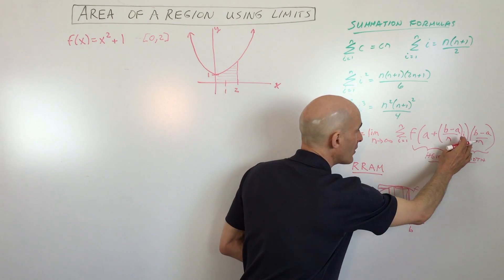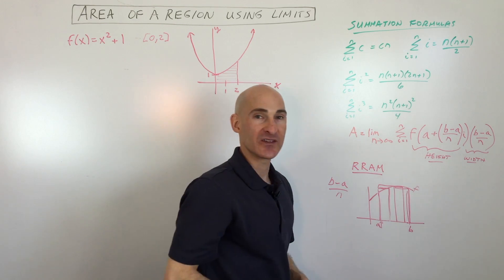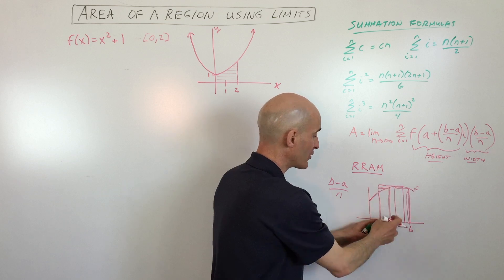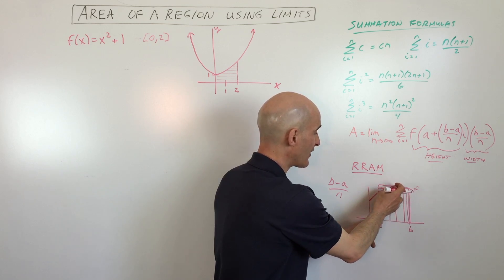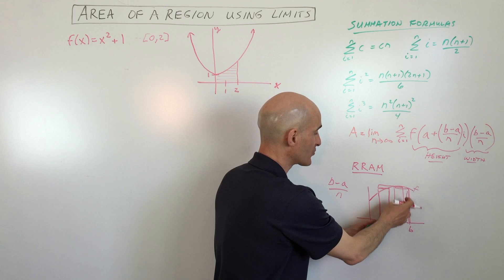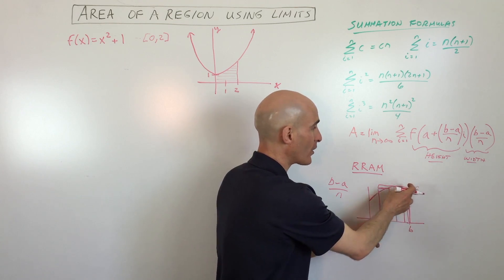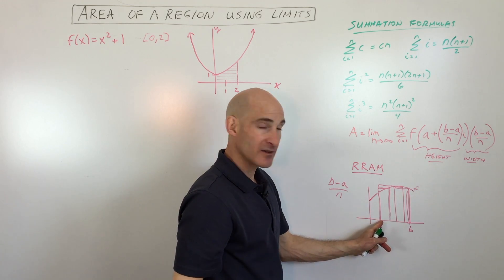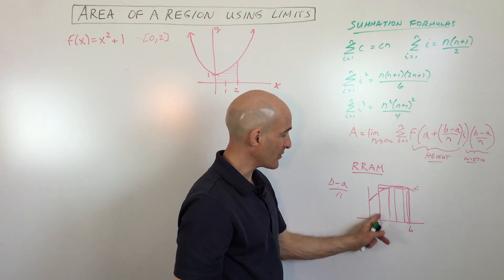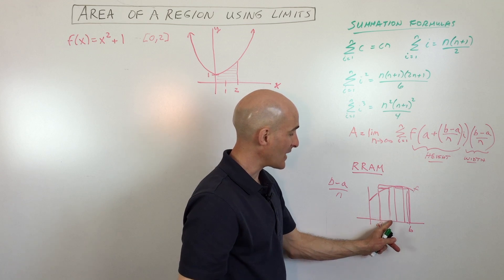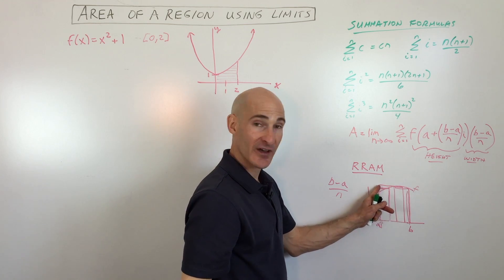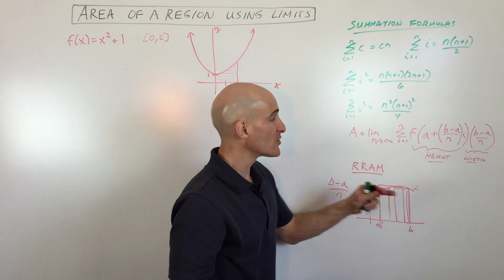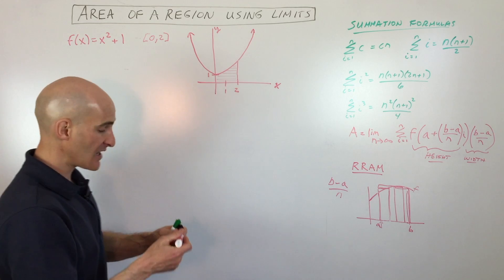There's this variable i — it's like an index. As i equals one, you find the height of the first rectangle. When i equals two, you find the height of the next rectangle, then i equals three, and i equals four if you have four rectangles. The key thing is that you're starting at the left side of the area that you want to find, and you just keep adding one width, find the height at that point, then add another width, find the height at that point. So let's go ahead and do this in an example and you'll see how this works.